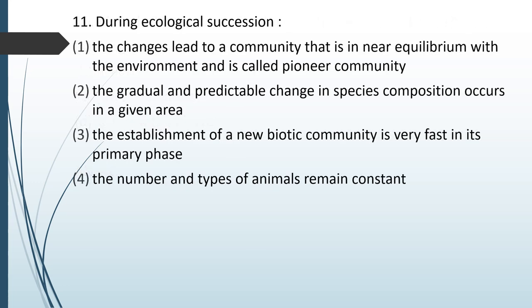During ecological succession: (1) changes lead to a community in near equilibrium with the environment, called pioneer community; (2) gradual and predictable changes in species composition occur in a given area; (3) establishment of a new biotic community is very fast in its primary phase; (4) the number and type of animals remain constant. The correct answer is option 2 — there is a gradual and predictable change in species composition occurring in a given area.